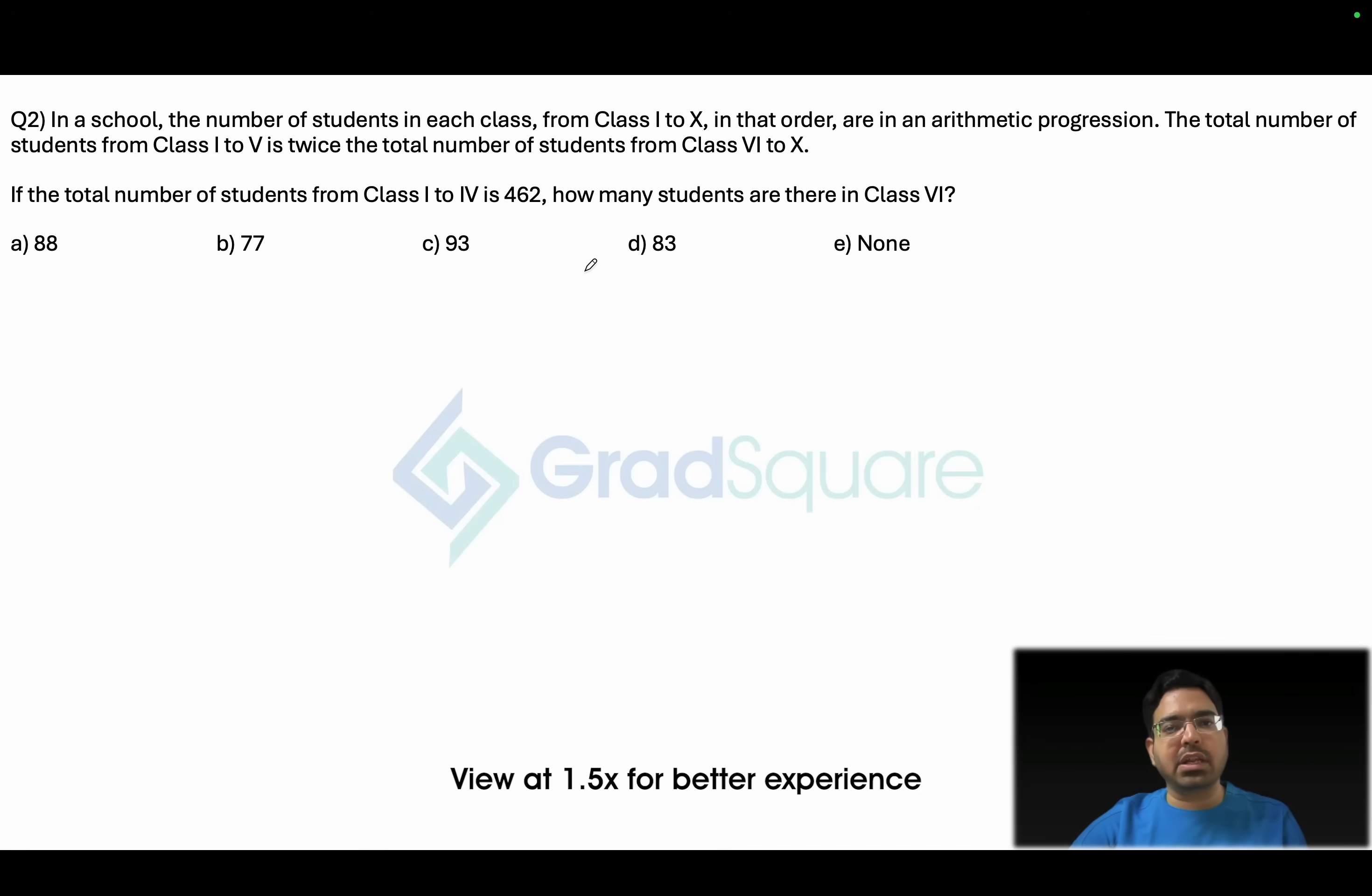Now in our school there are classes from class 1 to class 10. The number of students in each of the class is in arithmetic progression in that order. The number of students in class 1 to 5 is twice the total number of students from class 6 to 10. If the total number of students from class 1 to 4 is 462, then how many students are there in class 6?